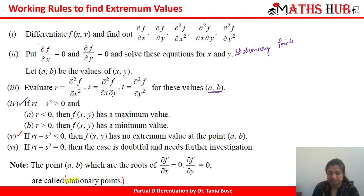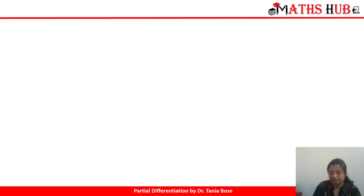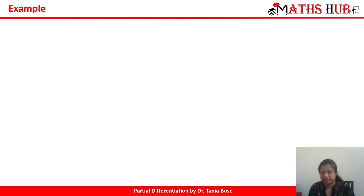To summarize: the function has extremum values when rt - s² > 0. The function has no extremum values when rt - s² < 0. The case becomes doubtful and requires further investigation when rt - s² = 0. Now let's come to the examples.